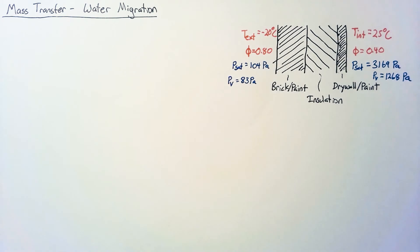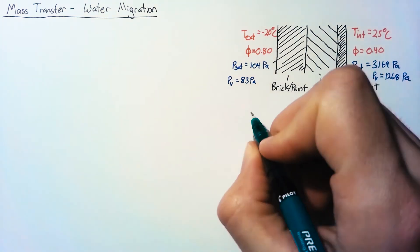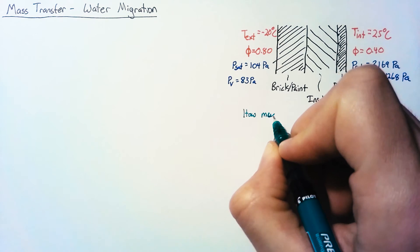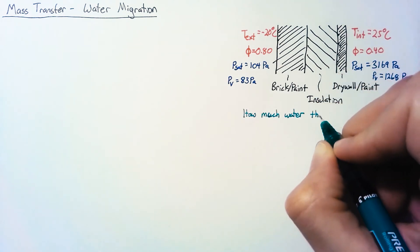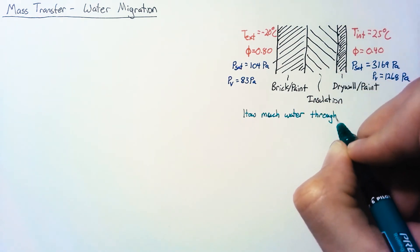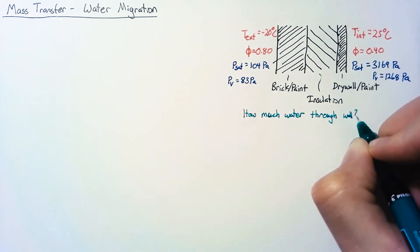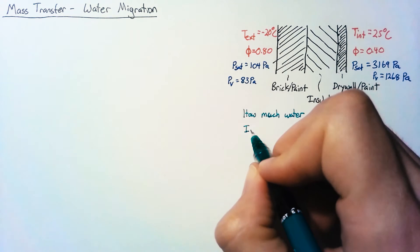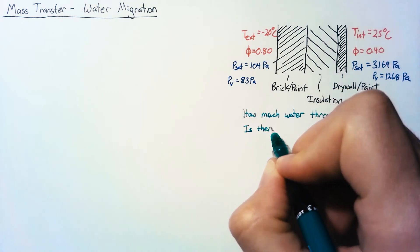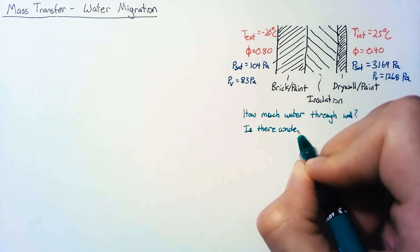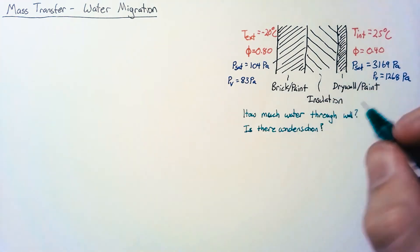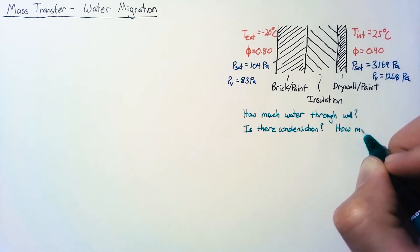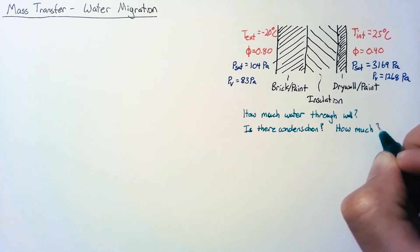Our question here is threefold. First, how much water is actually going through our wall? Second, is there condensation inside the wall? And then finally, if there is condensation, how much?